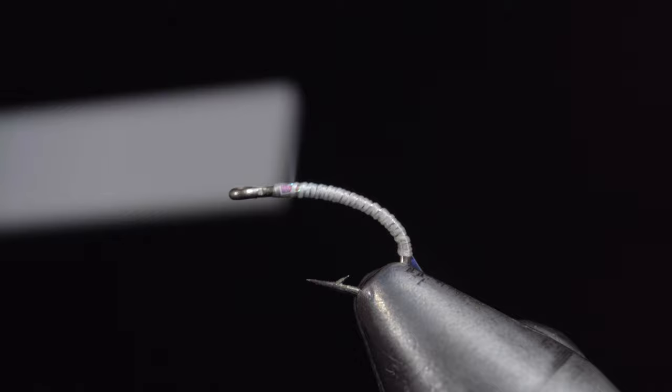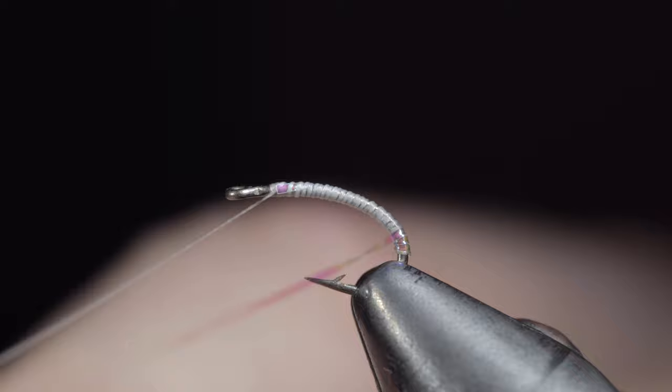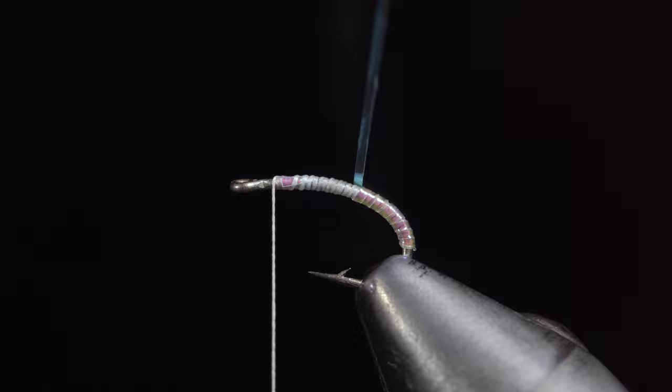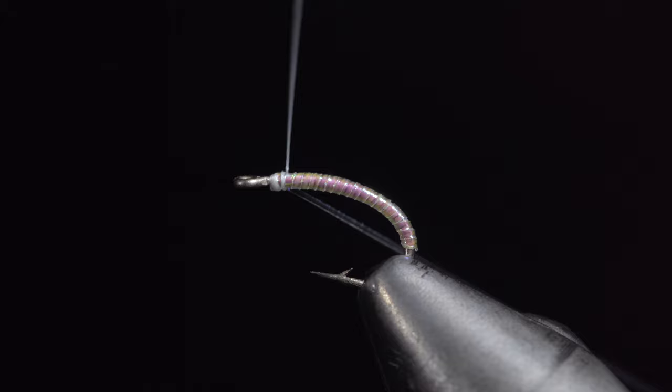With this step complete, grab your flashaboo and begin wrapping this in closed spirals towards the head of the fly. Take your time to ensure that we cover the entire thread base. Once we reach our thread, we'll secure and snip the excess free.